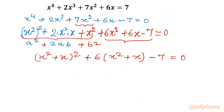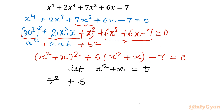This is a quadratic equation in (x² + x). So we will use the substitution: let x² + x equal to t. Our equation then becomes t² + 6t minus 7 equal to 0.